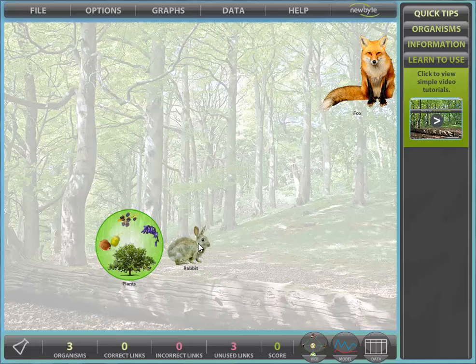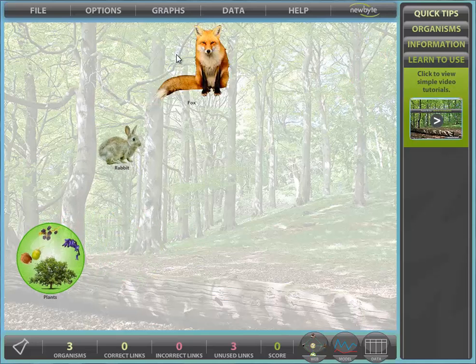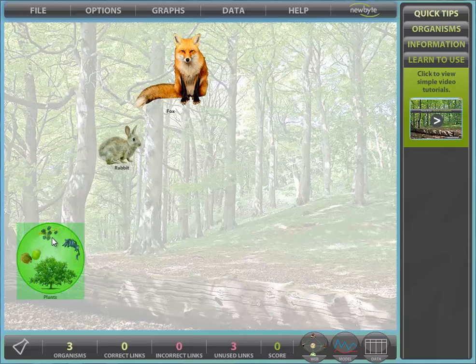To start constructing your Chain or web, first select the prey organism by clicking on it. Since energy in the form of food always goes from prey to predator, so must their links. Next, select the predator.